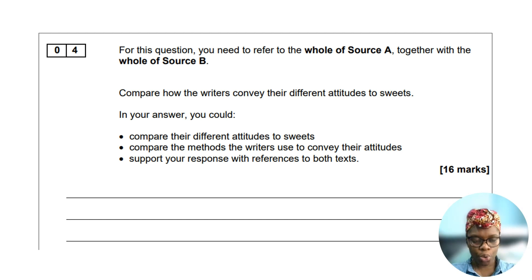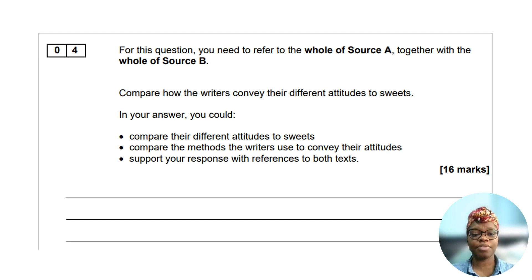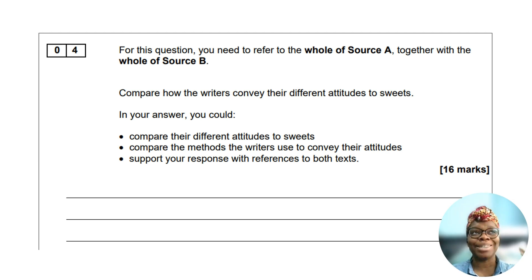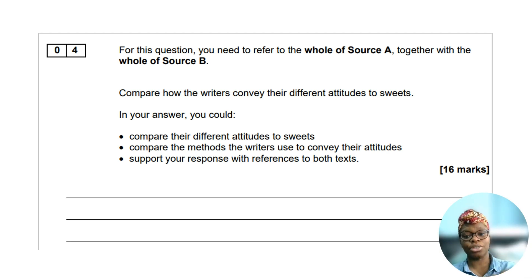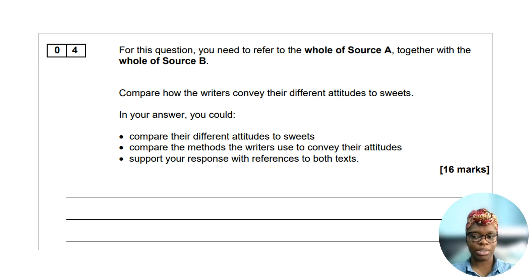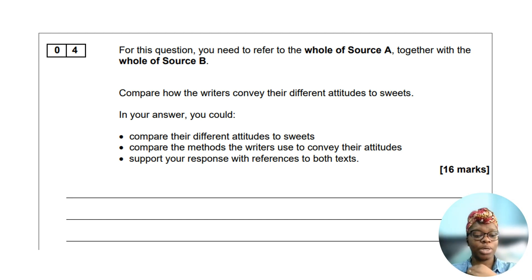Make sure you are using well-selected quotations directly from the text and comparative connectives such as on the other hand or however. Each time you make your point, provide a good quotation, identify the language or structural technique used, and explain how that technique creates the attitudes set out in the question. Three big paragraphs are enough — don't write more than three because you won't have enough time.